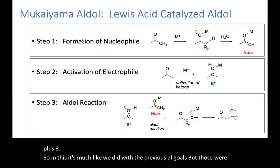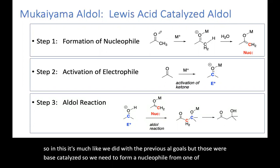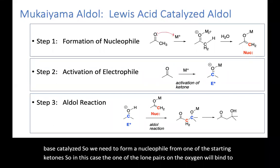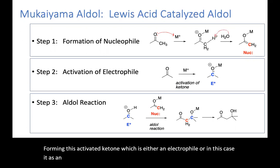So we need to form a nucleophile from one of the starting ketones. In this case, one of the lone pairs on the oxygen will bind to the metal, forming this activated ketone, which is either an electrophile or, in this case, an activated acid.